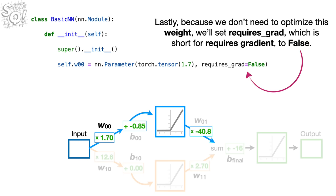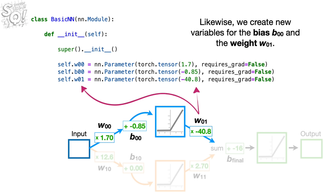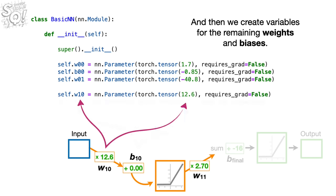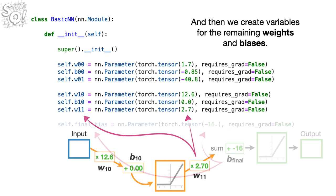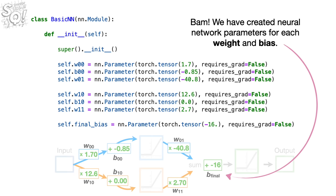Since weight W_00 is 1.70, we initialize the new parameter with a tensor set to 1.7. Because this is a tensor, the neural network can take advantage of accelerated arithmetic and automatic differentiation. Because we don't need to optimize this weight, we set requires_grad — short for requires gradient — to false. Likewise, we create new variables for bias B_00, weight W_01, and then the remaining weights and biases. We have created neural network parameters for each weight and bias.